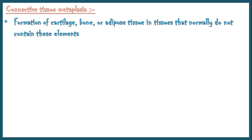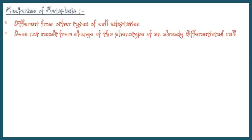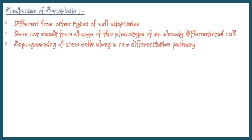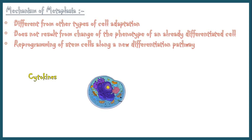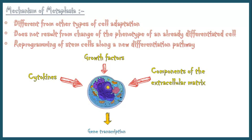In connective tissue metaplasia, there is formation of cartilage, bone, and adipose tissue in tissues that normally do not contain these elements, like bone formation in muscle. The mechanism of metaplasia is different from other types of cell adaptations. It does not result from a change in the phenotype of an already differentiated cell; instead, it is a result of reprogramming of stem cells along a new differentiation pathway. Extracellular signals mediated by cytokines, growth factors, and components of the extracellular matrix induce gene transcription of stem cells and differentiation into another cell type.